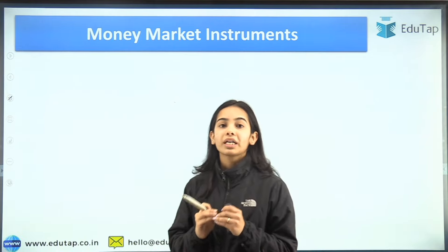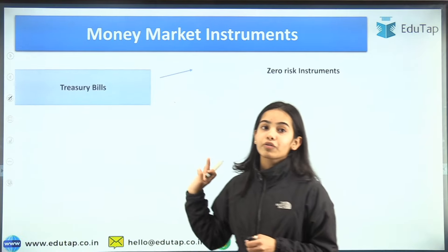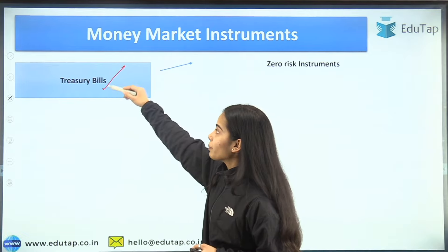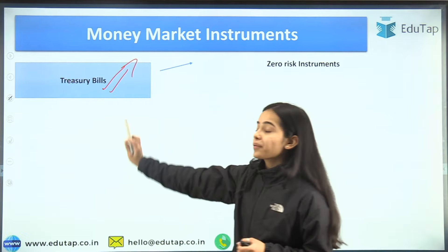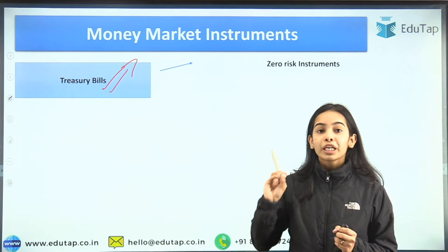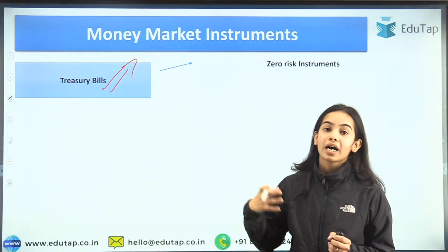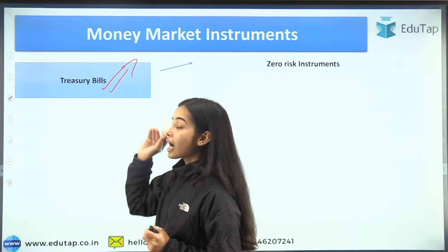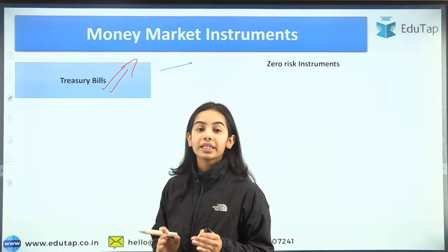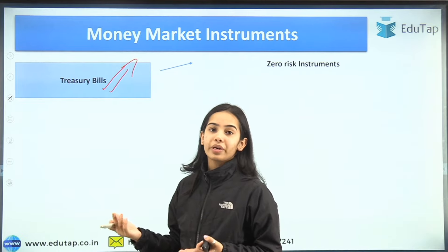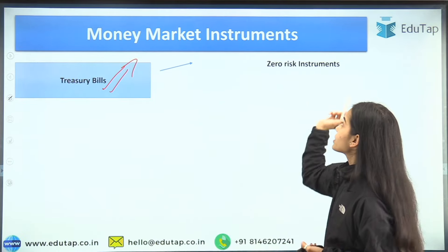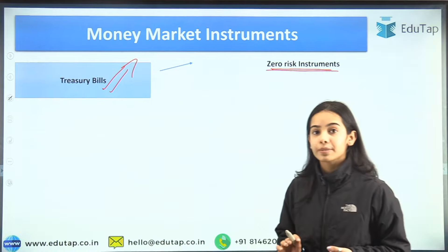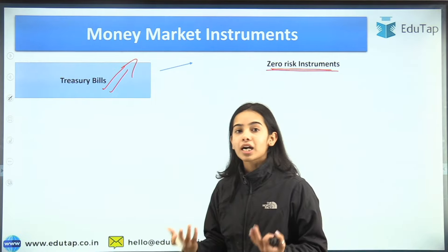Starting with the money market instruments. The first instrument we will discuss today is treasury bills. Treasury bills are bills issued by the government — we can call them government treasury bills. The RBI is the one that auctions these treasury bills.